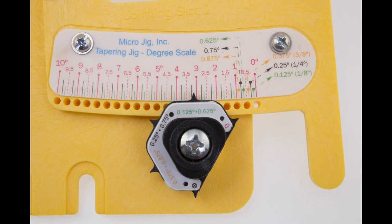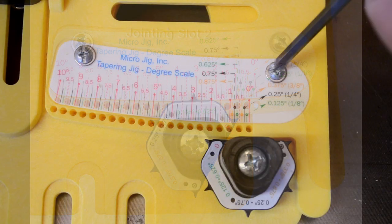The micro-dial scales on your tapering jig come from the factory pre-calibrated, but should the need arise, they can be reset.